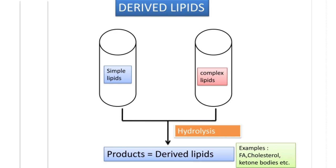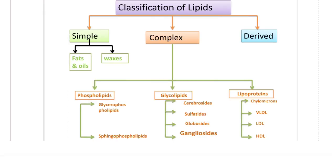Coming to the third group of lipids, derived lipids — these are derived from simple and complex lipids. When simple and complex lipids are hydrolyzed, they produce products known as derived lipids. Examples include fatty acids, cholesterol, and ketone bodies. In summary, lipids are classified into simple lipids, complex lipids, and derived lipids. Simple lipids are subclassified into fats, oils, and waxes. Complex lipids are classified into phospholipids, glycolipids, and lipoproteins.